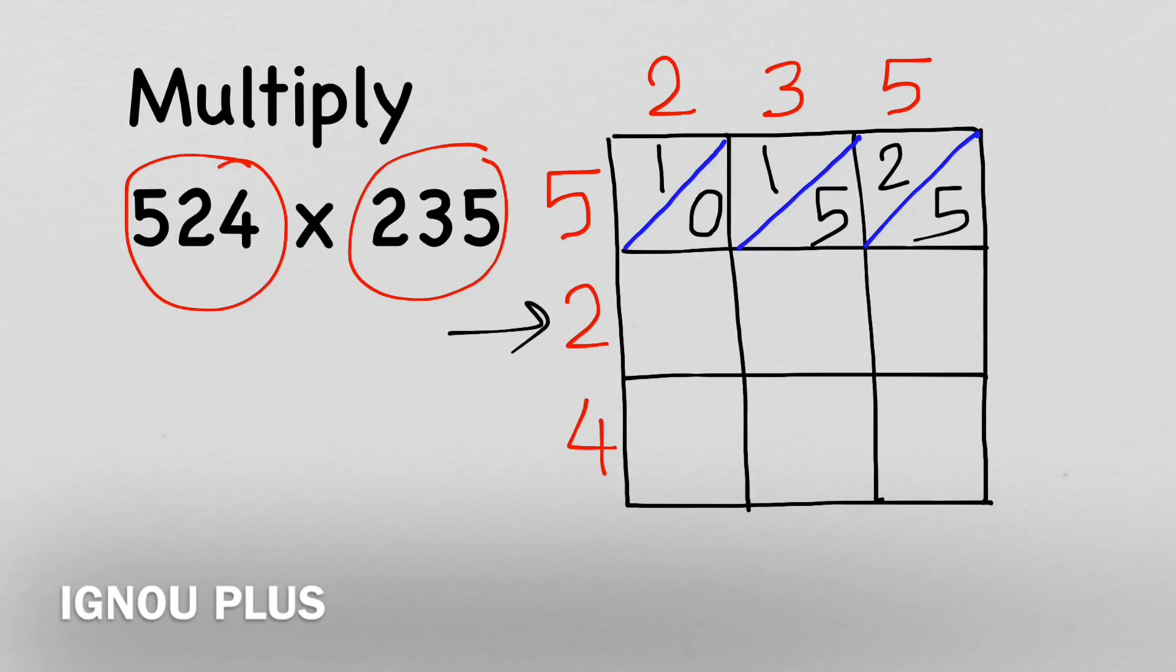In the second row, we have 2 and 2, which is 4. We will write 0 and 4. Then 2 times 3 is 6, so we write 0 and 6. Then we continue the same process.